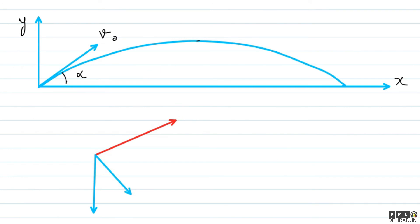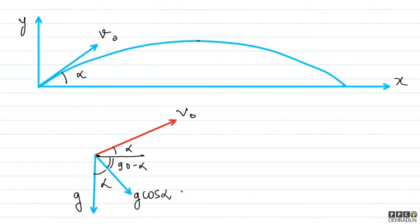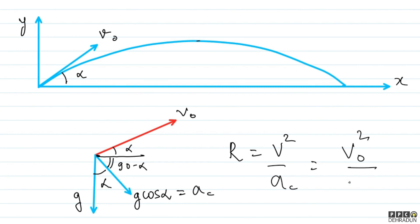From the diagram, V0 is given at angle alpha to the horizontal. The net acceleration is g downward. The component of g perpendicular to V0 — since the angle between V0 and horizontal is alpha — is g cos α. This is the centripetal acceleration. So radius of curvature = V² / A_centripetal = V0² / (g cos α). That is the radius of curvature at the origin.